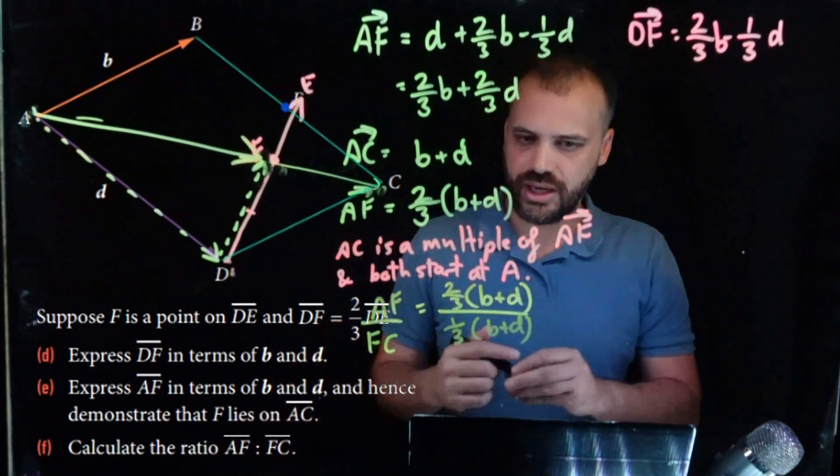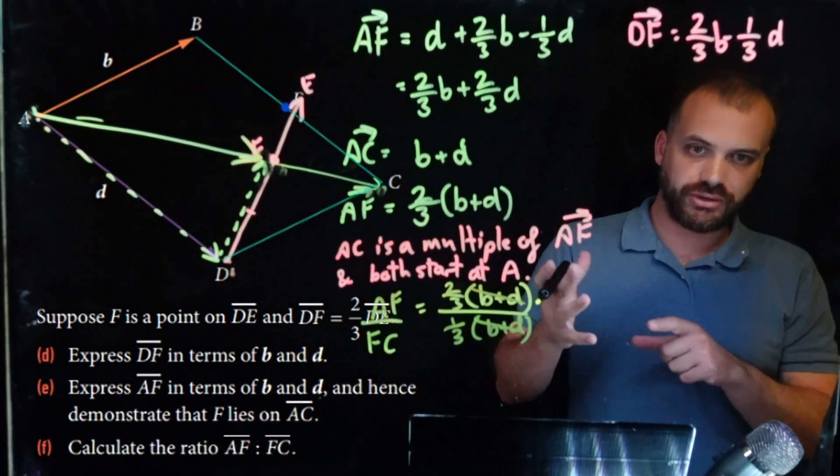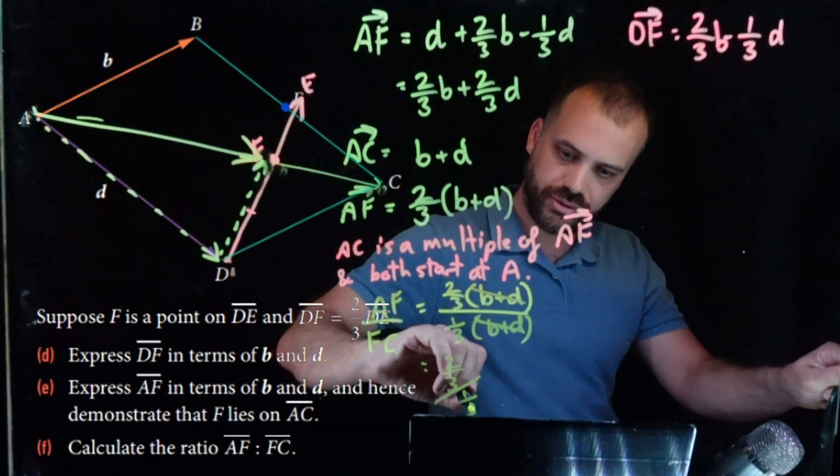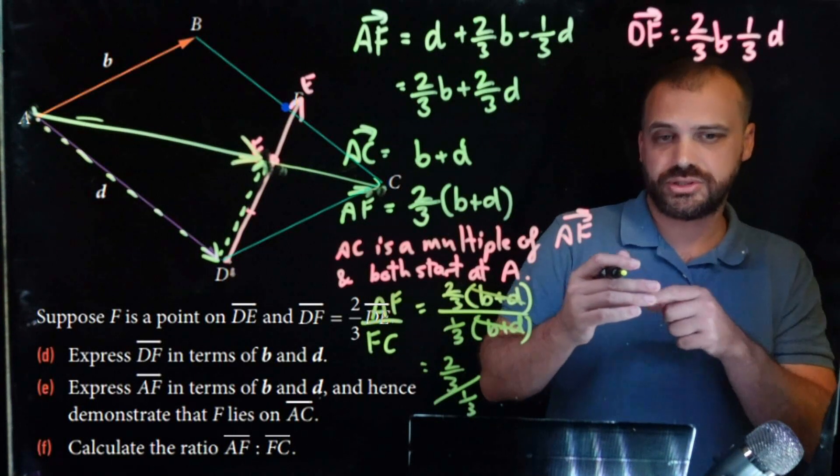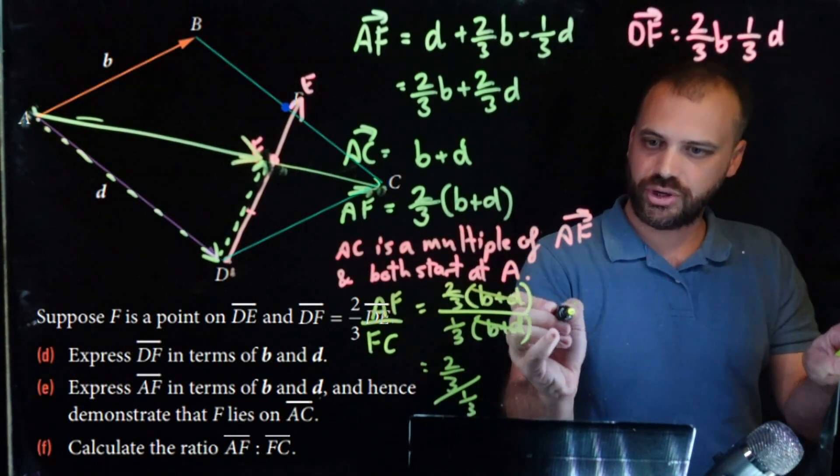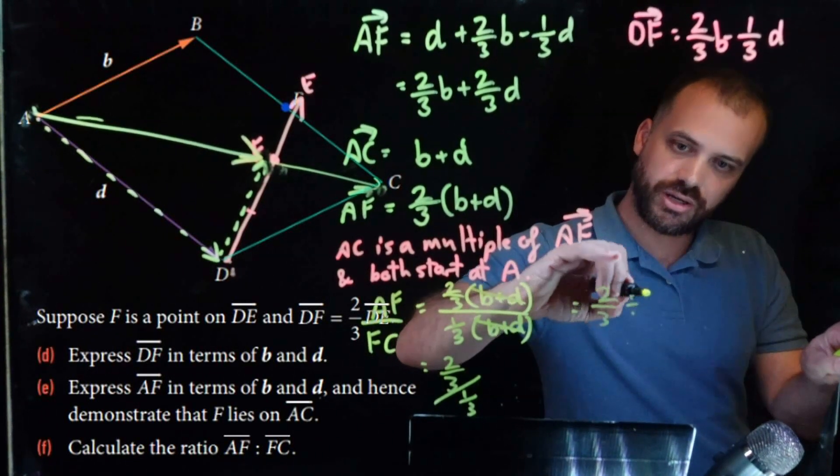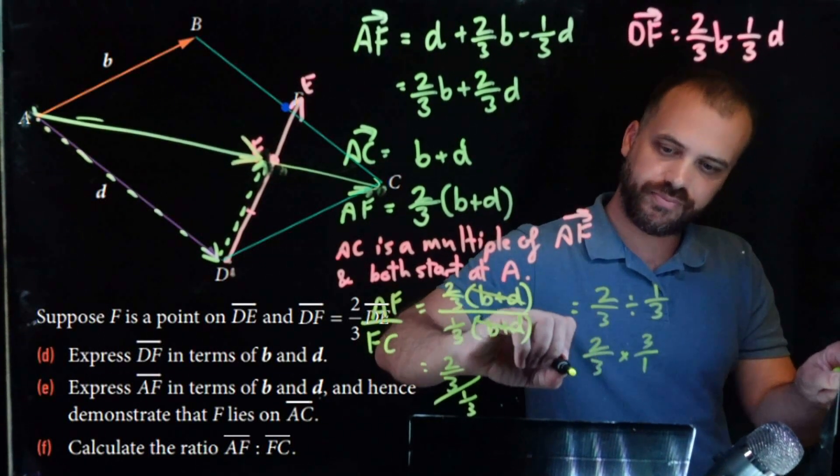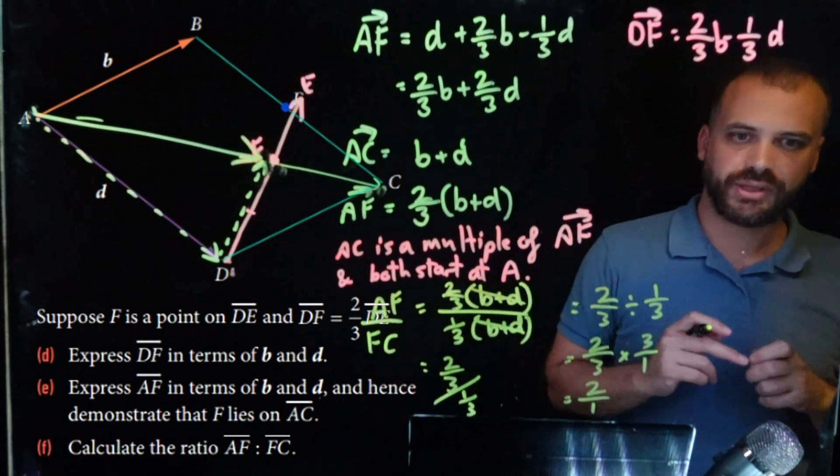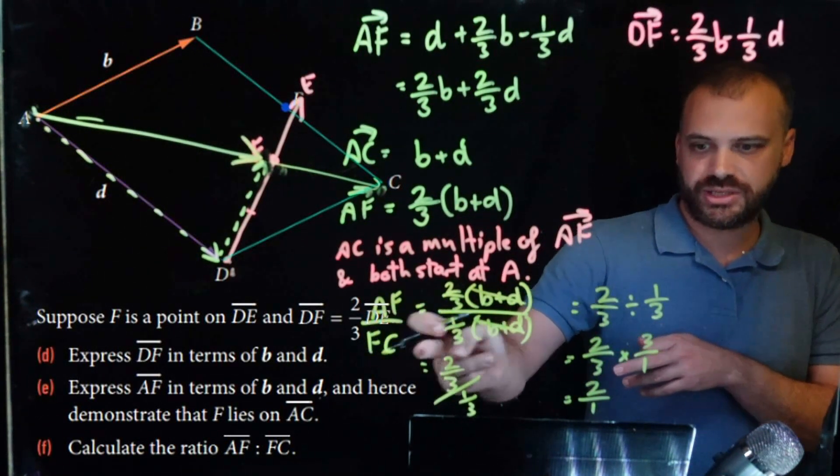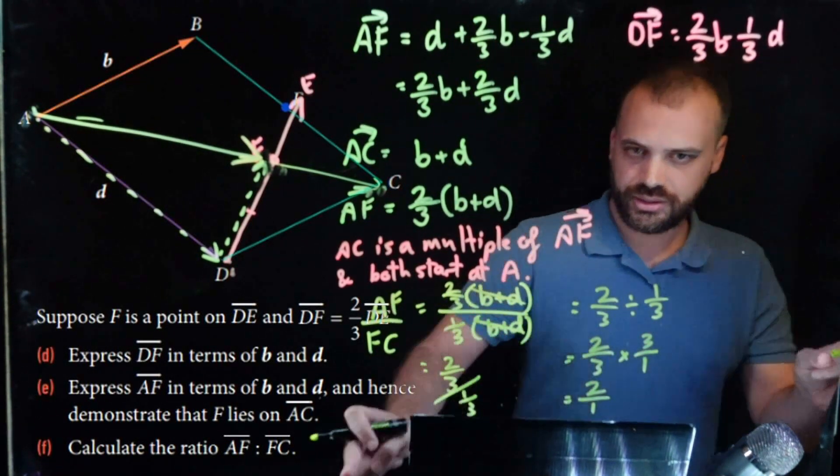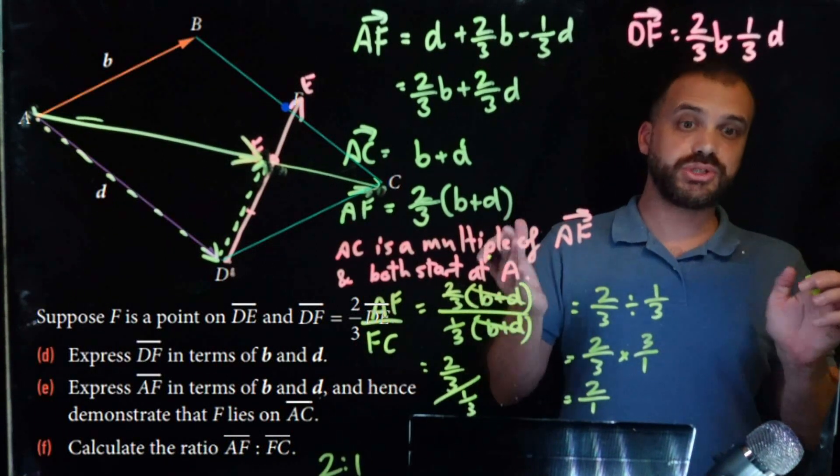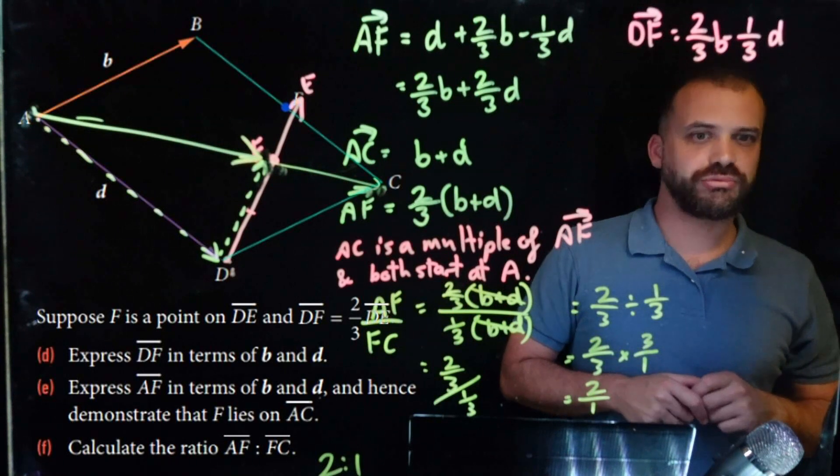So nicely when we do that, the B plus D's cancel each other out. And we have 2 thirds over 1 third. 2 thirds over 1 third. That's 2 thirds divided by 1 third. So, let's just, I'm going to write this over here. 2 thirds divided by 1 third. You should know that that's 2 thirds multiplied by 3 over 1, which is equal to 2 over 1. The ratio of AF to FC is 2 is to 1. So, down here, 2 is to 1. A really great, great question. So fun.